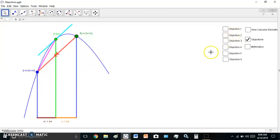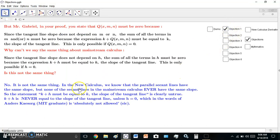The first objection is this. In your proof, you state that this must be zero because the tangent line slope does not depend on m or n, and the sum of all the terms in n must be zero. Therefore, the expression must be equal to k. Well, why can't you do this in the new calculus? Simply because k plus h is not the slope of the tangent line, and never is the slope of the tangent line. This is only possible if you're looking at the new calculus.